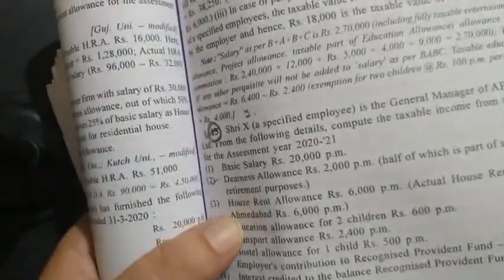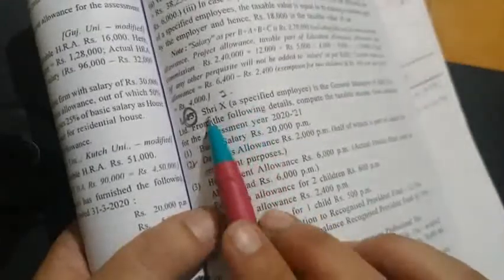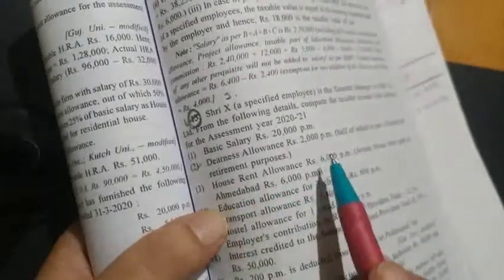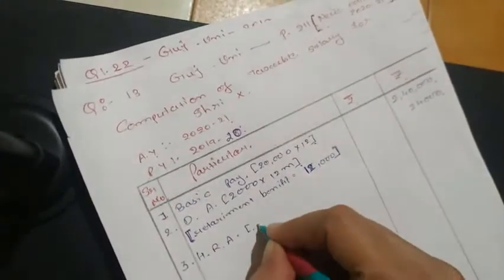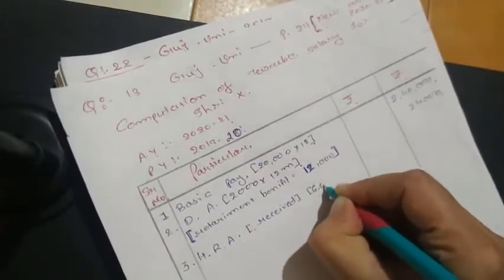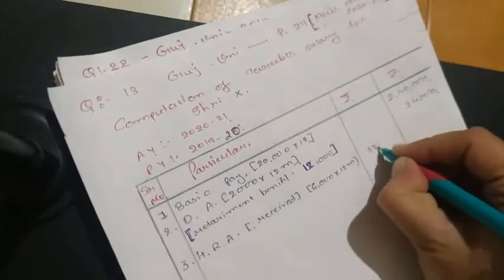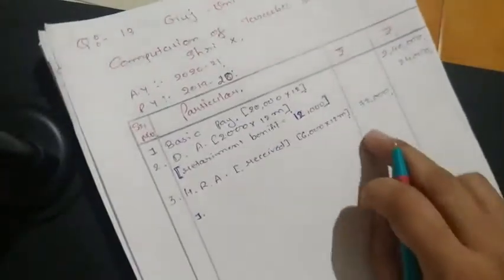Number 3: House Rent Allowance (HRA) given is ₹6,000 per month; actual house rent paid at Ahmedabad is also ₹6,000 per month. HRA is not fully taxable — it is partly taxable. We write HRA received: ₹6,000 × 12 = ₹72,000. This ₹72,000 will not all be taxable. We consider three amounts and whichever is least will be the exemption.